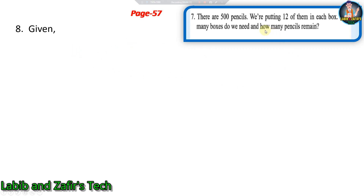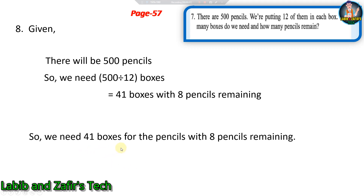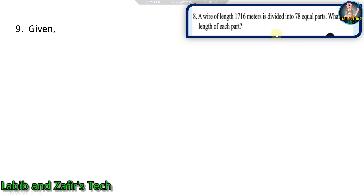Problem eight: given there are 500 pencils and we are putting 12 of them in each box, how many boxes do we need and how many pencils remain? We have to divide 500 by 12. So we need 500 divided by 12 boxes, that is 41 boxes with 8 pencils remaining. We need 41 boxes for the pencils with 8 pencils remaining.